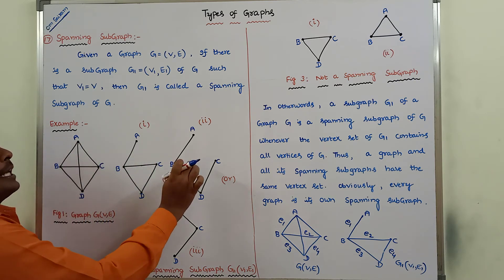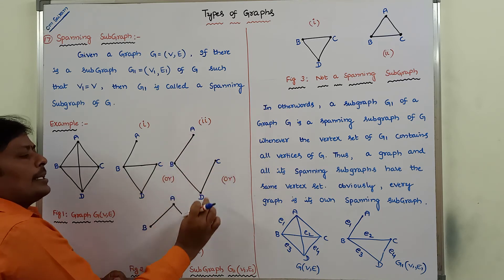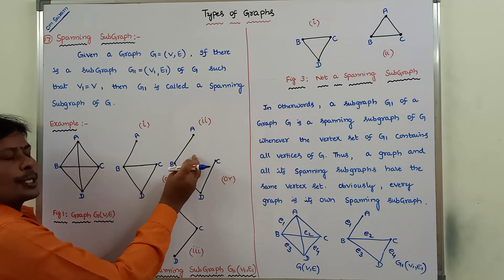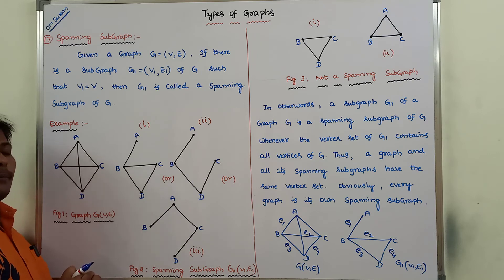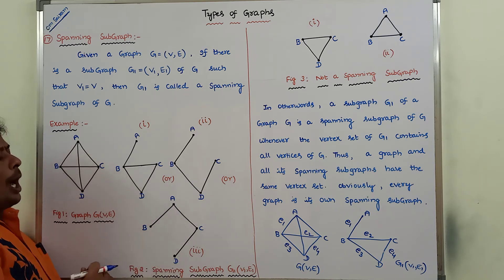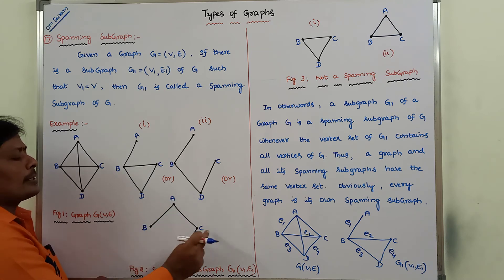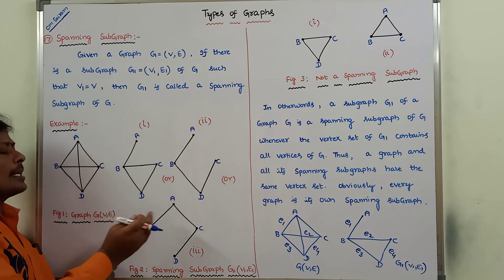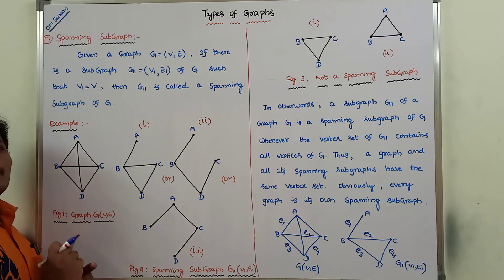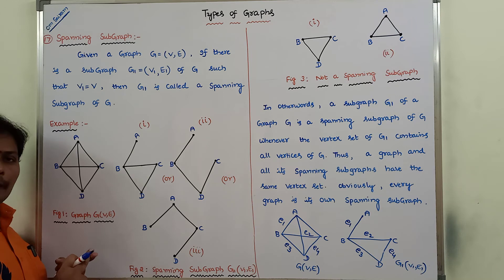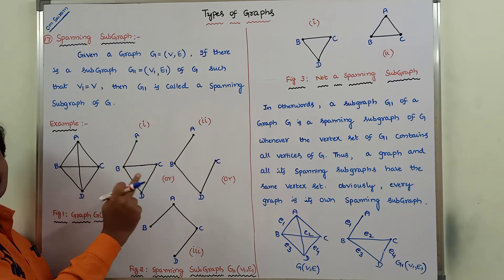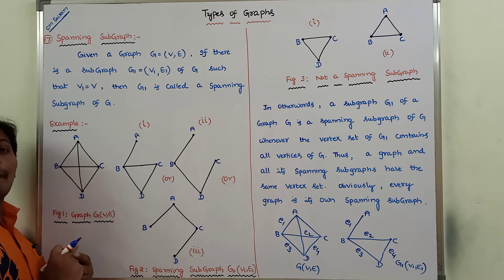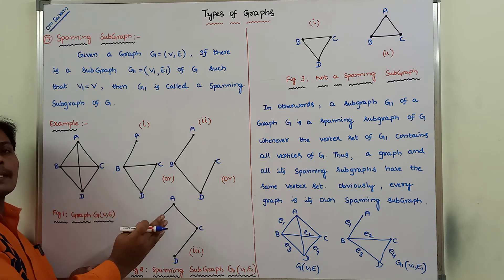Next, we can go for the second example. Here A, B, C, D — four vertices are there. These four vertices should be there in G. Yes, four vertices are there in G. Hence we can say that this is a spanning subgraph. Now consider the third one — how many vertices are there? Four vertices: A, B, C, D. The same vertices should be there in G. Hence we can say that this is also a spanning subgraph.